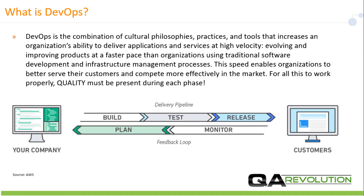For all this to work properly, quality must be present during each phase. The diagram below shows your company and your customers and how that interaction occurs — it occurs using a delivery pipeline. This pipeline includes build, test, release, monitor, and plan, and it includes a continuous feedback loop.